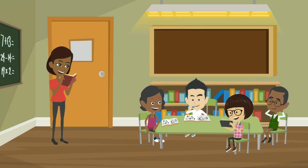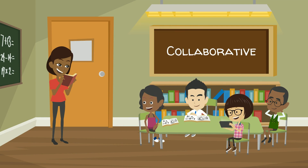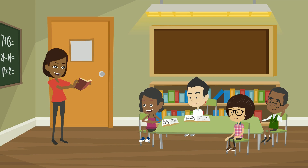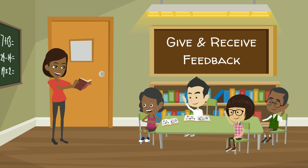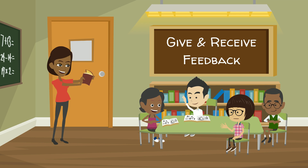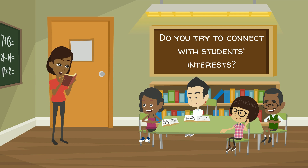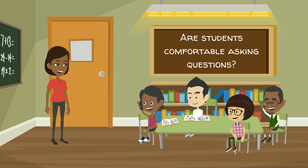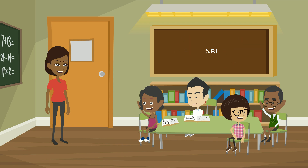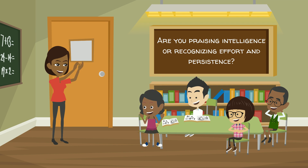One of the key requirements for anyone to provide effective feedback is to set up a classroom environment that is collaborative and in which the students feel safe to both give and receive feedback. The environment requirements are the same as noted earlier in the course. Are students engaged? Do you as a teacher try to connect with students' interests? Are students comfortable asking questions, or are they afraid to raise their hand? Are you praising intelligence or recognizing effort and persistence?